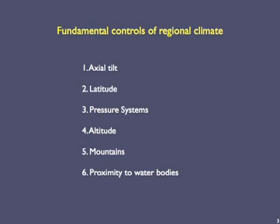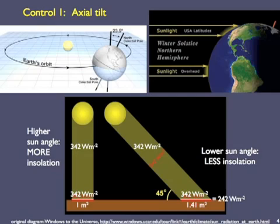We start with axial tilt. You probably know that Earth's axis of rotation is not at a right angle to the plane in which Earth orbits around the Sun. Instead, it makes an angle of about 23.5 degrees to that plane, although this number varies over thousands of years, as we'll talk about in episode 12. Because the Earth's surface is curved, different parts of it receive different amounts of insolation — that's incoming solar radiation — depending on the angle of the incoming insolation.